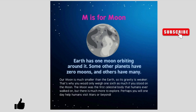M is for Moon. Earth has one moon orbiting around it. Some other planets have zero moons and others have many. Our Moon is much smaller than the Earth, so its gravity is weaker. That's why you would only weigh one-sixth as much if you stood on the Moon. The Moon was the first celestial body that humans ever walked on, but there is much more to explore. Perhaps you would one day help humans visit Mars or beyond.